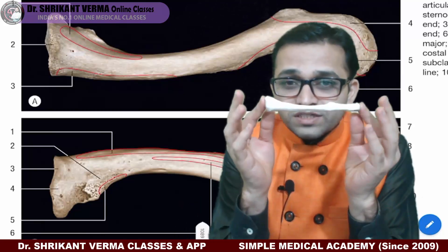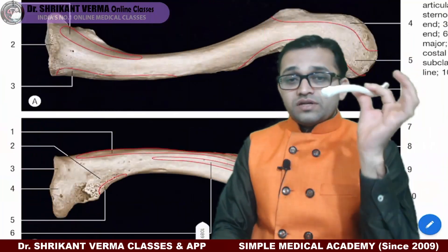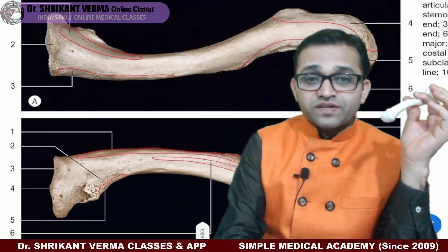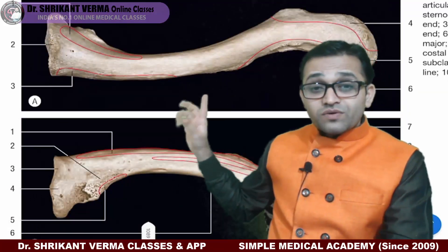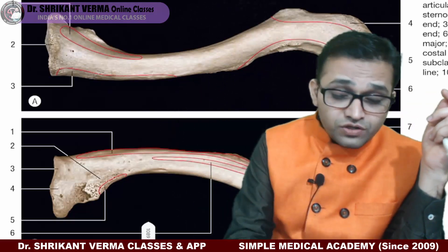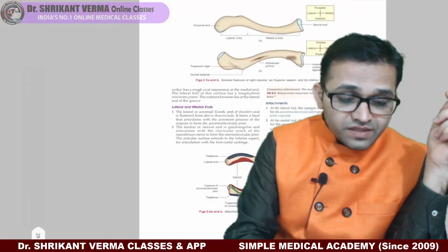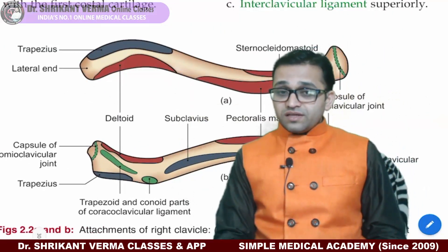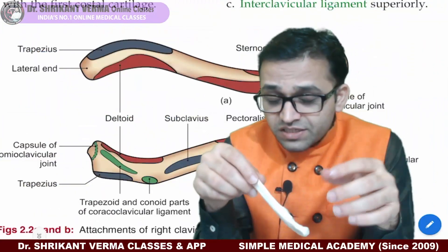We are going to discuss the clavicle — a short and sweet discussion. Whenever you are reading a bone, you need to know how to read it, like the collarbone or scapula. We will look at standard textbook images from Gray's Anatomy as well as BD Chaurasia and Vishram Singh. The first thing you need to know is identification — is this the clavicle or the scapula?